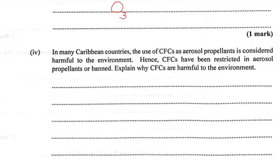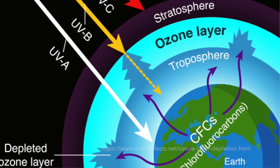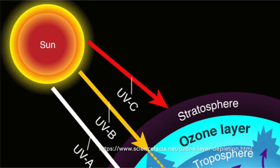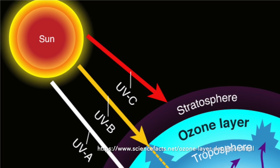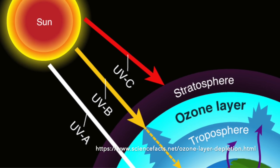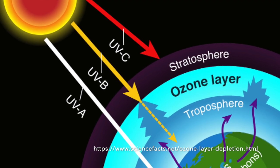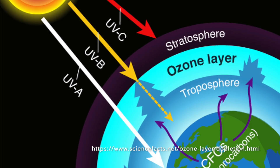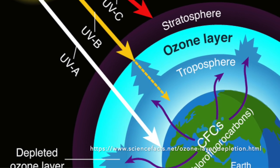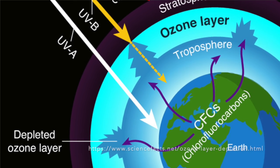Part four of 6A: in many Caribbean countries the use of CFCs as aerosol propellants is considered harmful to the environment, hence they have been restricted or banned. Explain why CFCs are harmful to the environment. Chlorofluorocarbons break down the ozone layer in the upper atmosphere — the stratosphere. This allows more UV light to reach the Earth's surface, resulting in an increase in humans developing skin cancer and cataracts.